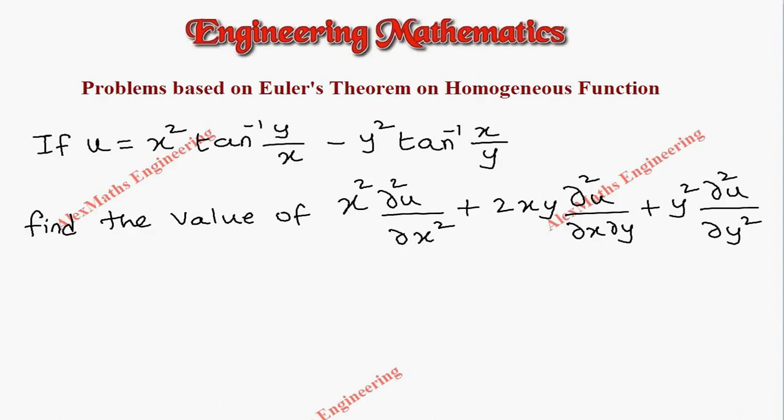Hi students, this is Alex. In this video we're going to discuss a problem based on Euler's theorem on homogeneous functions. There's a function given: u equals x squared times tan inverse y by x minus y squared times tan inverse x by y, and we have to find the value of the given expression.